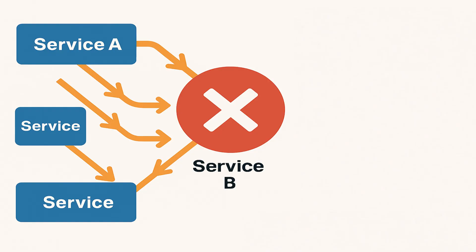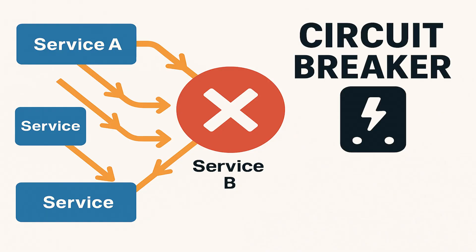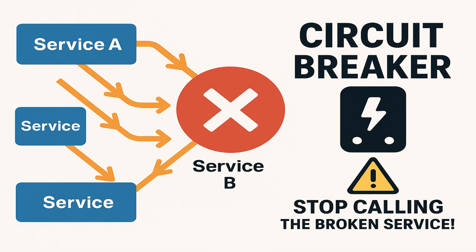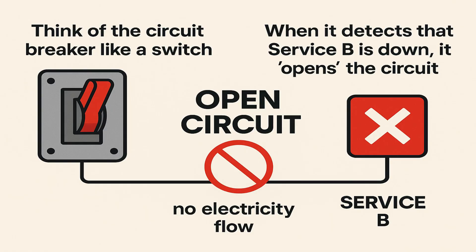This is exactly where a circuit breaker helps. It acts like a safety guard saying, hold on, stop calling the broken service. Think of a circuit breaker like a switch. When it detects that service B is down, it opens the circuit — and in an open circuit, electricity does not flow.